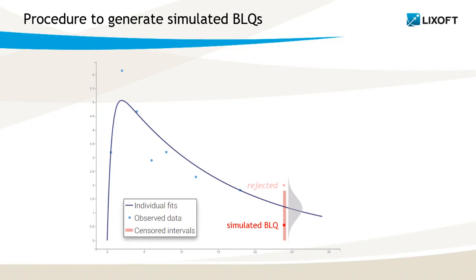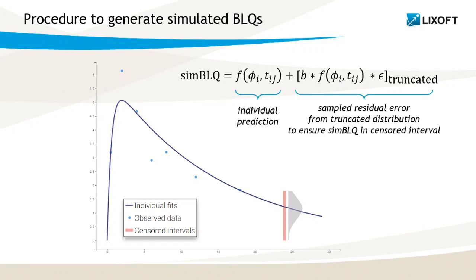Actually, this would be pretty slow in case we would have many rejections. So instead, what we do is that we sample from a truncated normal distribution for the residual error. So the formula is the following. The simulated BLQ value is equal to the individual prediction plus a sample from the residual error. The residual error usually follows a normal distribution, but in this case we truncated in order to ensure that the simulated BLQ value is in the censored interval.